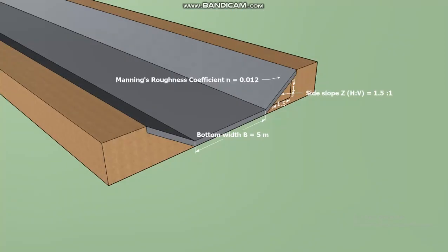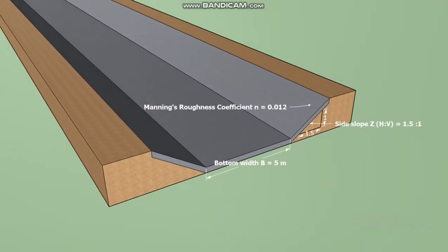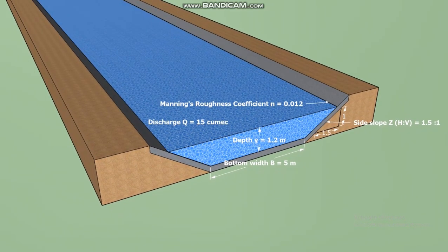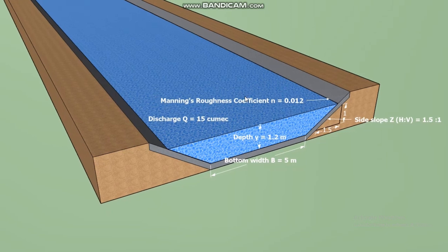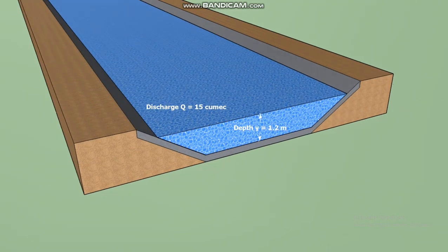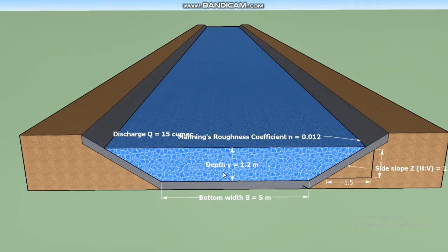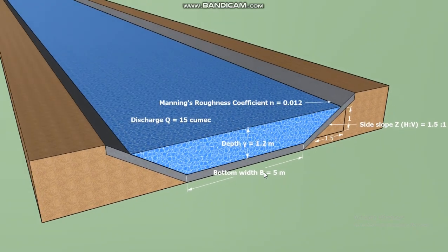A trapezoidal channel with a bottom width of 5 meters and side slope of 1.5 horizontal to 1 is to be constructed. The lining of this channel should be made up of smooth concrete, so the Manning's roughness coefficient will be equal to 0.012. We want this channel to carry a discharge of 15 cubic meters per second at a depth of 1.2 meters. For that, what should be the bed slope of this channel?